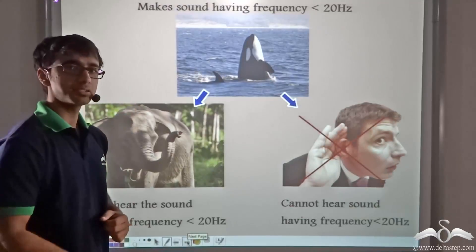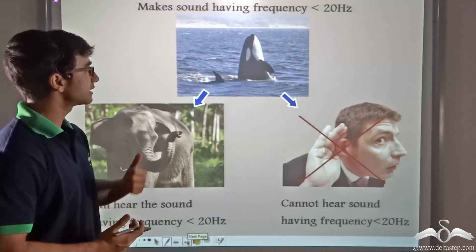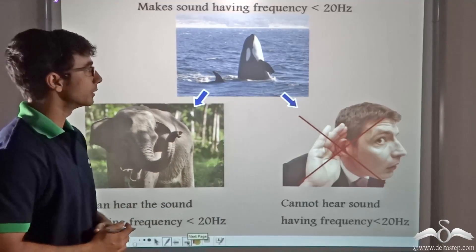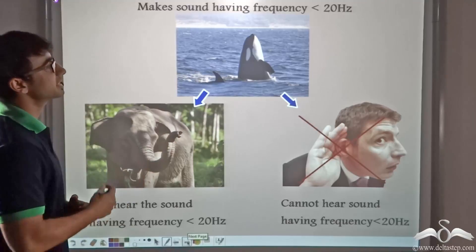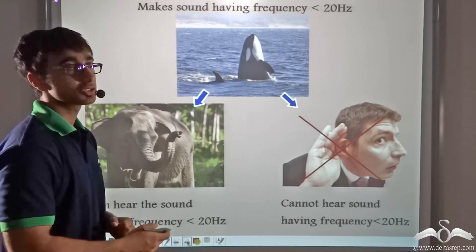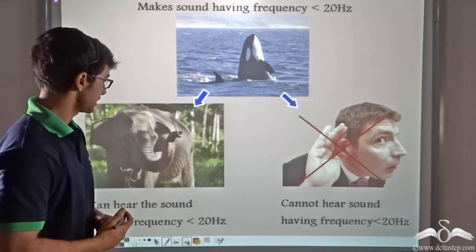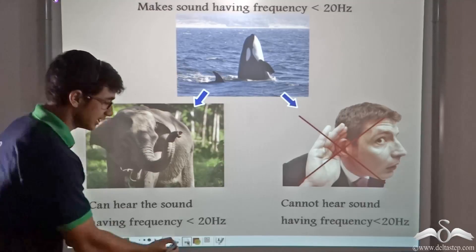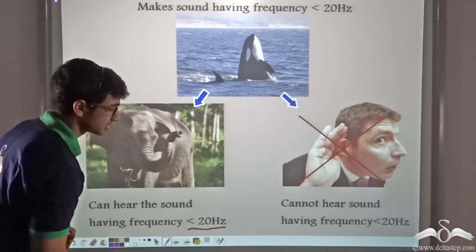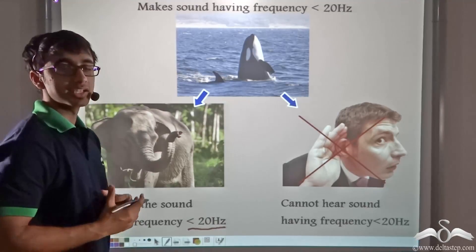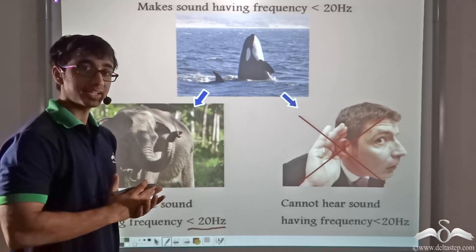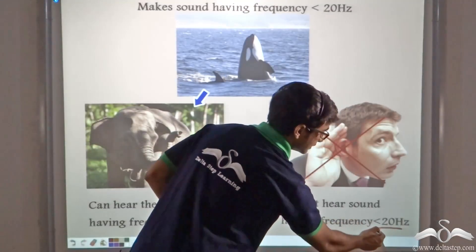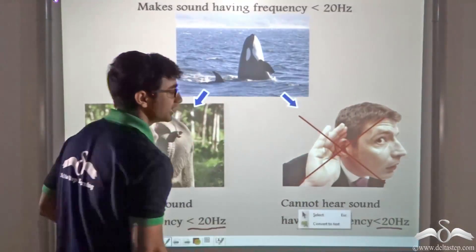So what was happening in the previous case where the whale was making a sound that the elephant could hear but the human could not? Well, the whale was making a sound that had a frequency that was below 20 Hertz. And as we just learned, elephants can hear sounds that are below 20 Hertz. But since the audible range for a human being is from 20 Hertz to 20,000 Hertz, a human being cannot hear sound that is below 20 Hertz.